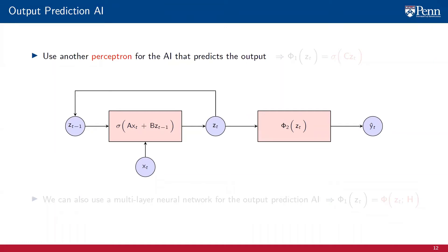For the output prediction AI phi2, we can use another perceptron. We multiply the hidden state zt by a matrix C and pass the output through a pointwise nonlinearity. It is also possible to use a multilayer neural network for the output AI.